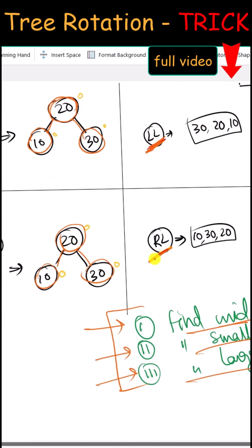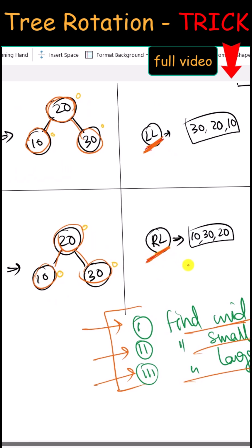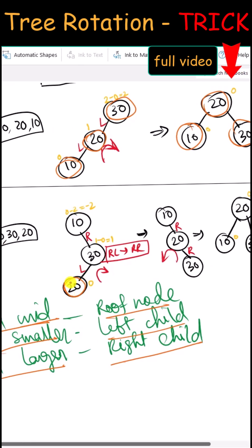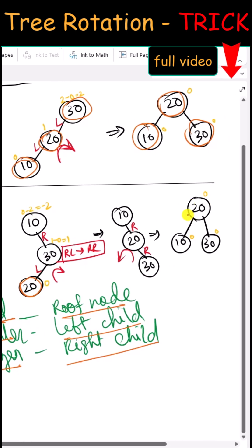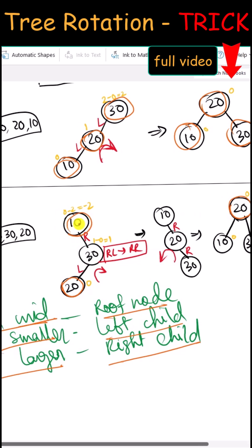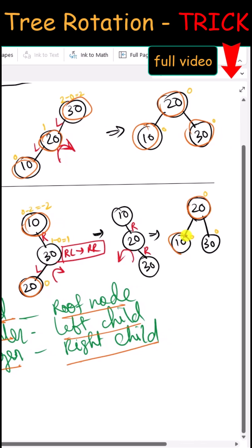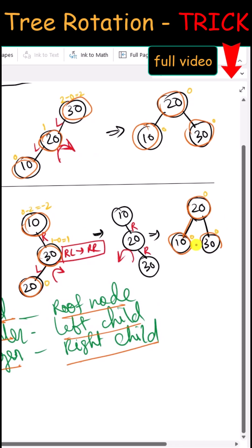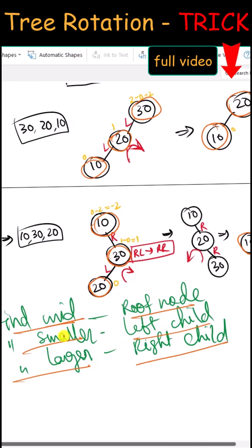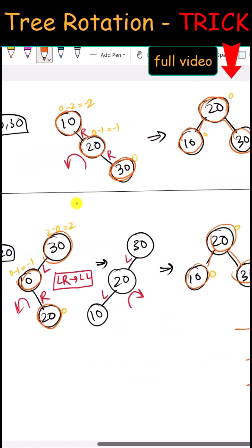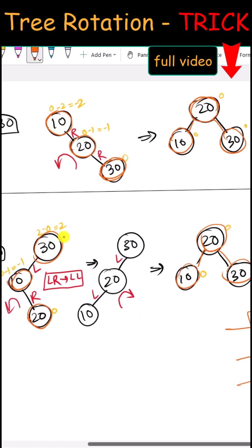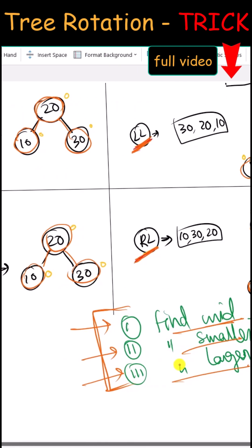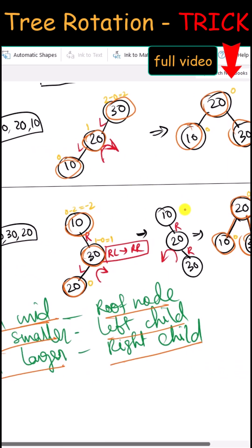In the case of right-left rotation, find the median of the three numbers — that will be the root, the smaller one will be the left child, and the larger one will be the right child. No matter what kind of rotation we have, we can simply follow these three steps and easily balance the tree.